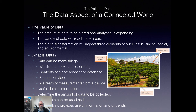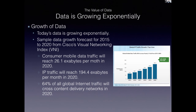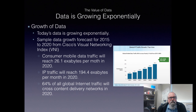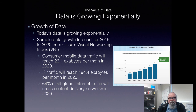Let's look at the growth of data. Data is growing exponentially. We have a graph from Cisco's Visual Networking Index showing that rate of growth. It's massive amounts of data — 26 exabytes per month by 2020 in mobile data, and 195 exabytes per month in 2020 across IP networks. This is a huge amount of data and it's only going to continue to increase with more sensors and more devices being connected to the internet.